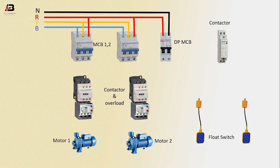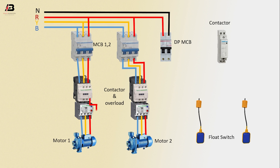Phase connection input to DP MCB. Three phase connection from MCB1 to contactor and from contactor to motor output. Output connection from MCB2 to contactor, second phase connection to contactor 2, and third phase connection to contactor 2. Three phase connection from overload to motor 2 output, output connection from contactor to overload.